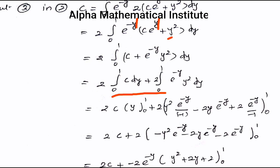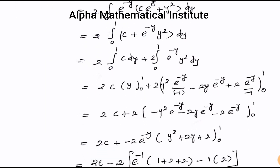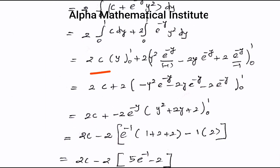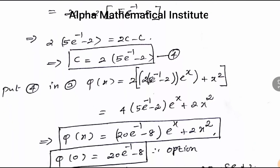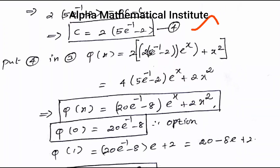The integral can be split into two parts: 2 times [integral from 0 to 1 of c dy] plus 2 times [integral from 0 to 1 of e^(−y) · y² dy]. Since c is a constant it can be taken outside. Integrating 1 gives y evaluated from 0 to 1. For the second integral, using Bernoulli's formula to integrate e^(−y) · y², we substitute the upper and lower limits and simplify.